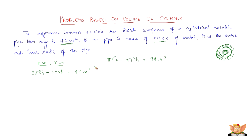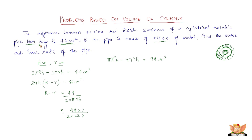Taking out 2πh as common from the surface area equation, we get capital R minus small r = 44 cm². So capital R minus small r = 44 ÷ (2 × 22/7 × 14). Solving: 44 × 7 ÷ (2 × 22 × 14), with cancellations, gives capital R minus small r = 1/2. This is the first equation.